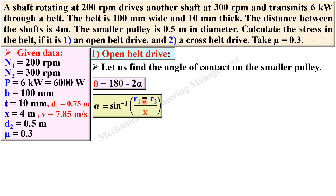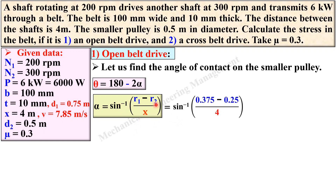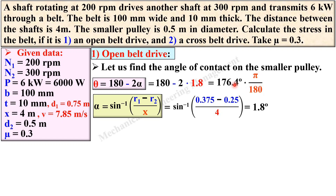To find alpha, apply: α = sin⁻¹[(r1 − r2)/x] for open belt drive (for cross belt drive it is plus). We have D1 and D2, so r1 = D1/2 and r2 = D2/2. With x = 4 m, simplifying gives α = 1.8°. Therefore θ = 180° − 2×1.8° = 176.4°, which converts to approximately 3.08 radians.